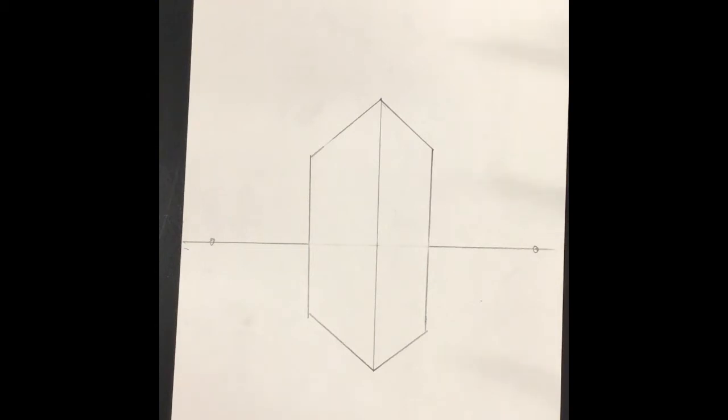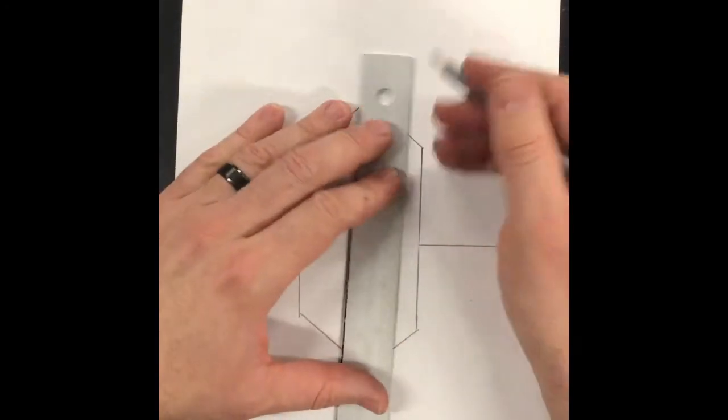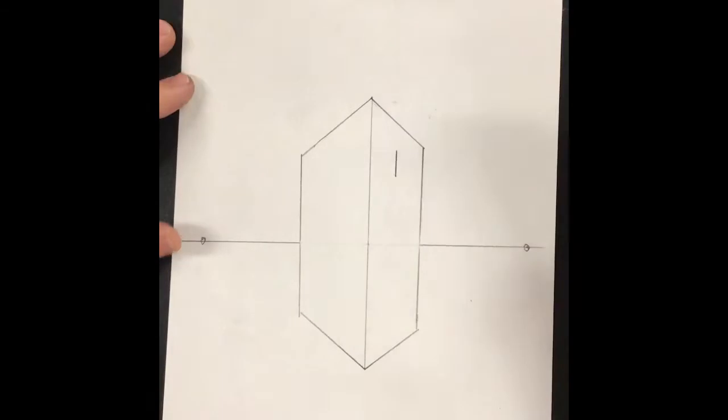All right, to start off an intersecting object, you really, like most things, start with a vertical line. This one's going to be above the horizon line. So I'm making a vertical line on this side of my cube.